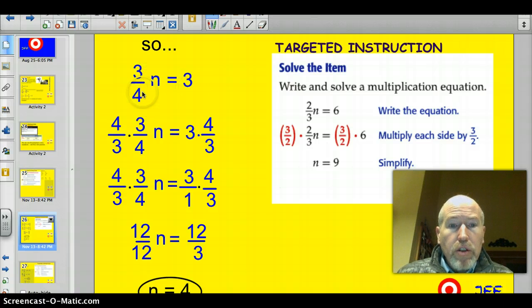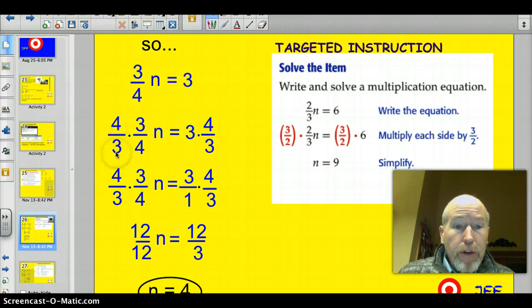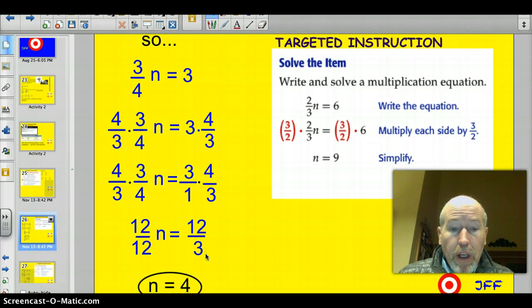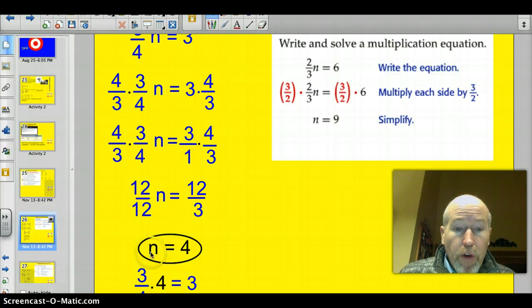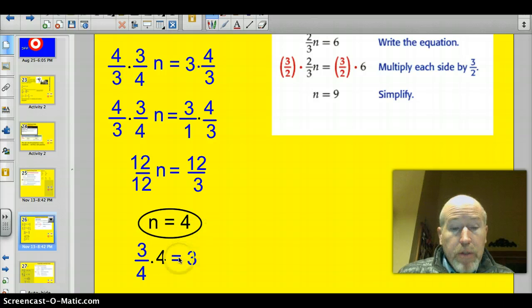I'll show you in more detail the steps right here. So here I wrote a problem. 3/4 n is 3. So multiply by the inverse, just like they did. Multiply each side by 4/3. So I did that. Here's 4/3 and 4/3. 4 times 3 is 12. 3 times 4 is 12. I'll show you that here. Now I have to multiply the other side by 4/3. 3 times 4 is 12. 1 times 3 is 3. So I've got 12/12, which is 1, or just plain n. And I have to solve this. 12 divided by 3, which is 4. If I substitute in my answer, 3 times 4, it's 12 divided by 4 is 3. See how that worked out?